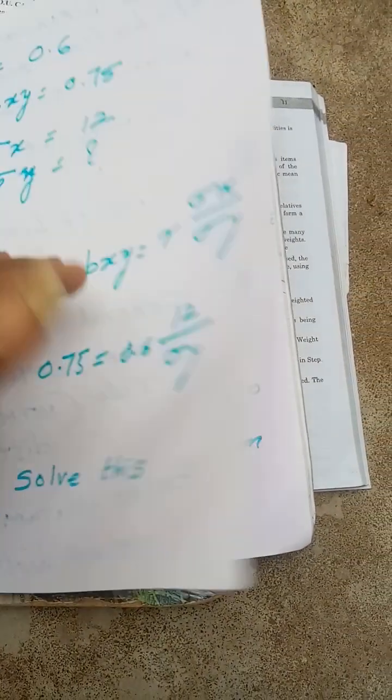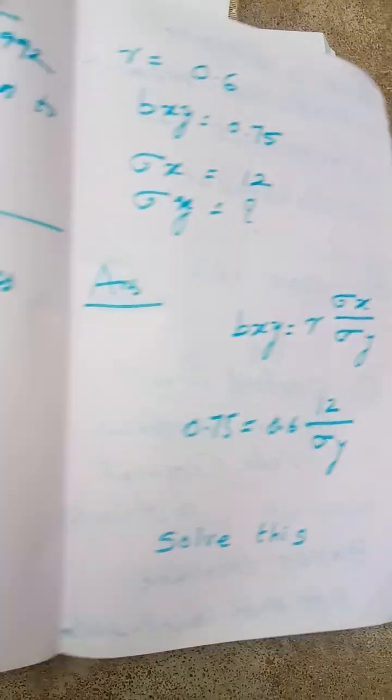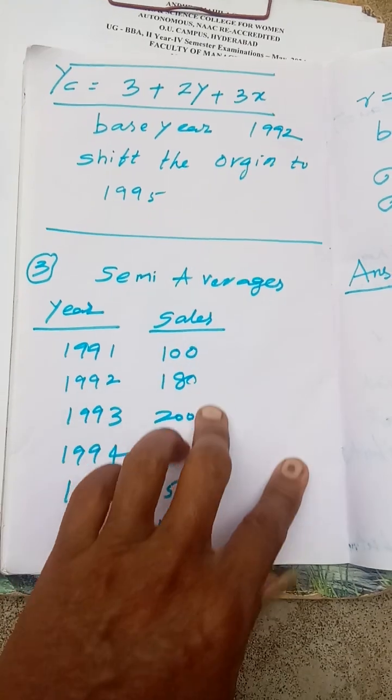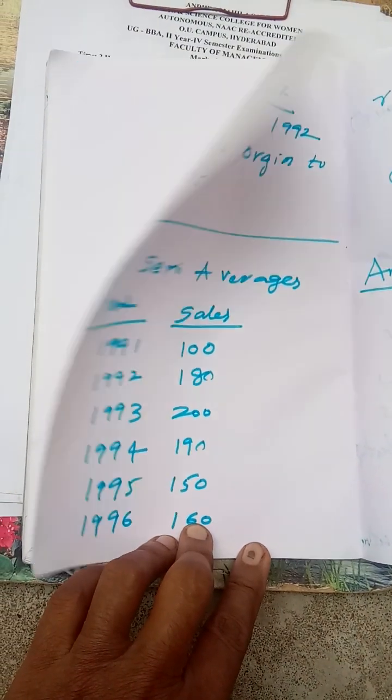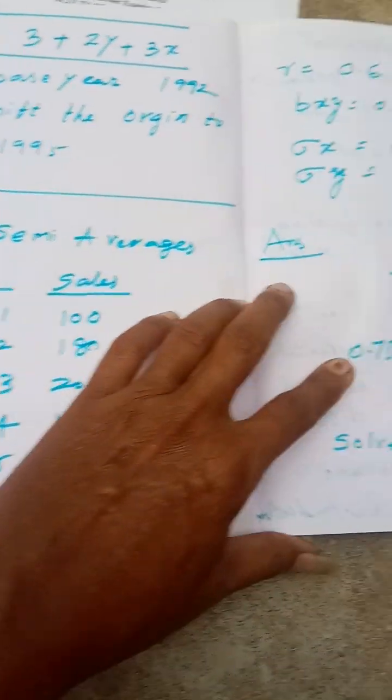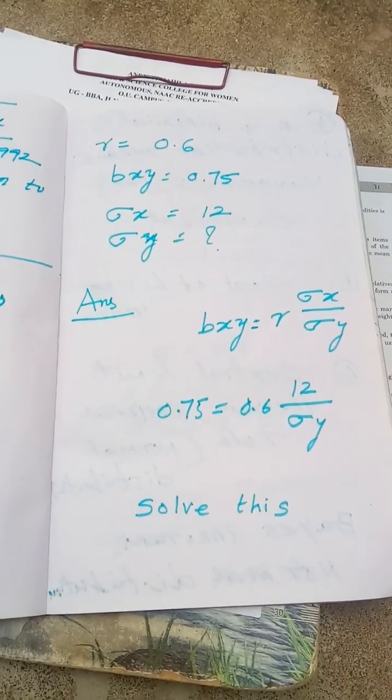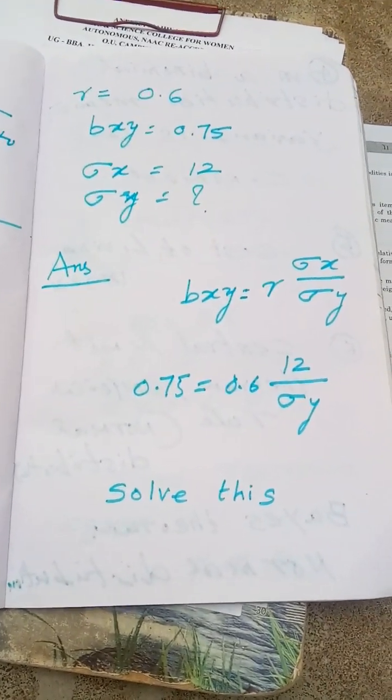Parabolic trend equation, base year shifting, chain index numbers. It's time to see chain index numbers also. Sometimes we don't know if they give one thing to do chain index number.